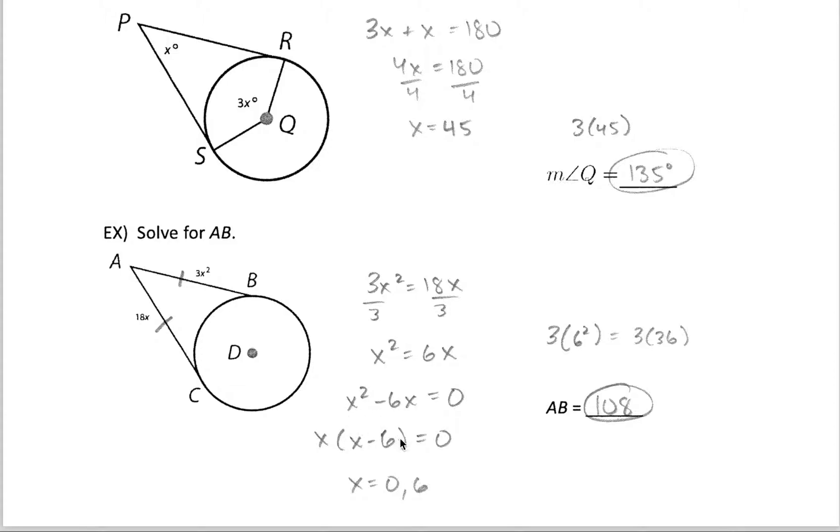And then now I just play this game called finding the zeros. Any number times the zero is going to be zero. So if this first term is zero, the whole thing is zero. Or if the second expression equals zero, then the whole thing equals zero. So I have two possible solutions. If I set x equal to zero out here, then zero times anything is going to be zero, so one possible solution is zero.